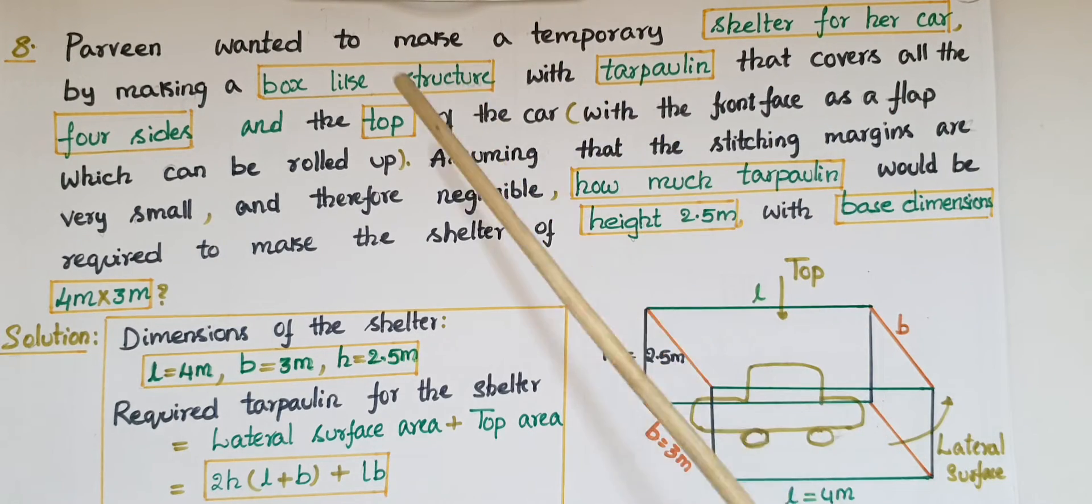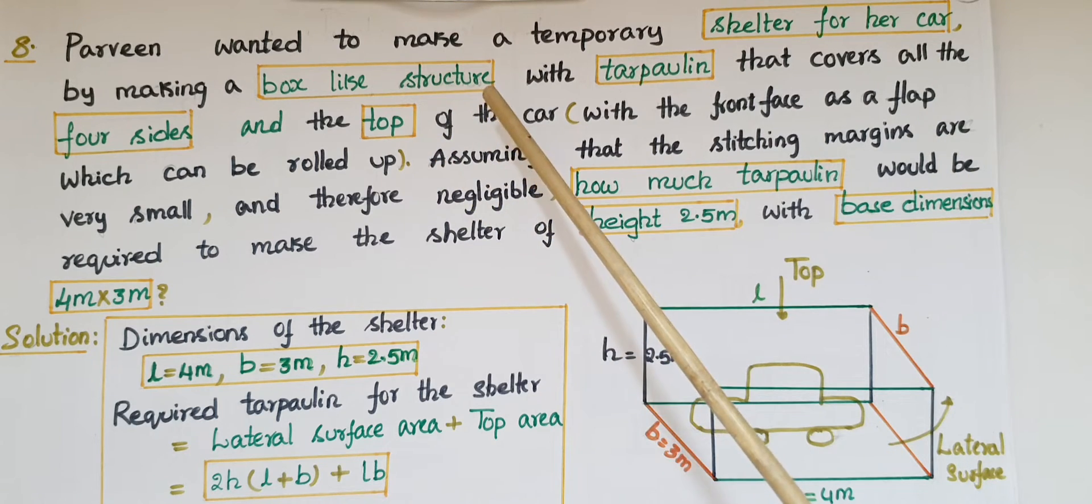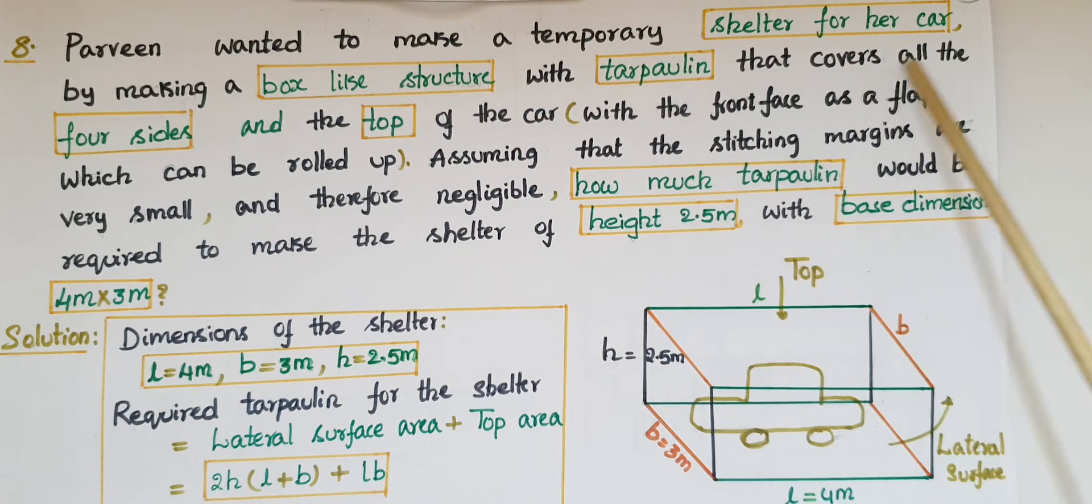This is 8th problem. Parveen wanted to make a temporary shelter for her car by making a box like structure with a tarpaulin that covers all the four sides and the top of the car with the front face as a flap which can be rolled up.